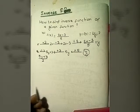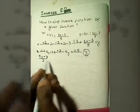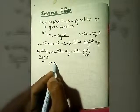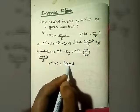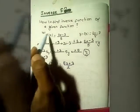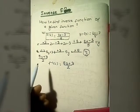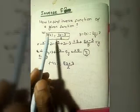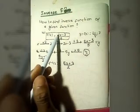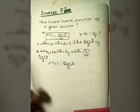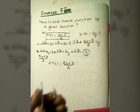Now let's check this algebraically. Replacing y with x, we get f inverse of x equals 5x plus 3 divided by 2. This makes sense — where the original had divided by 5, the inverse has multiply by 5; minus 3 becomes plus 3; multiply by 2 becomes divide by 2. Inverse means you simply reverse each operation.